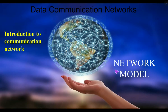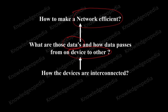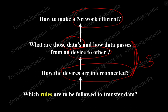Hello friends, in this lecture we will be discussing the network model. Earlier we discussed that we have to make the network efficient. To make the network efficient we should know what we are going to transmit, what is the form of the data, how these data are represented and how the devices are interconnected. After knowing how the devices are interconnected, we should know which rules are to be followed to transfer the data, because transferring data from one device to another in a network is a complicated process.